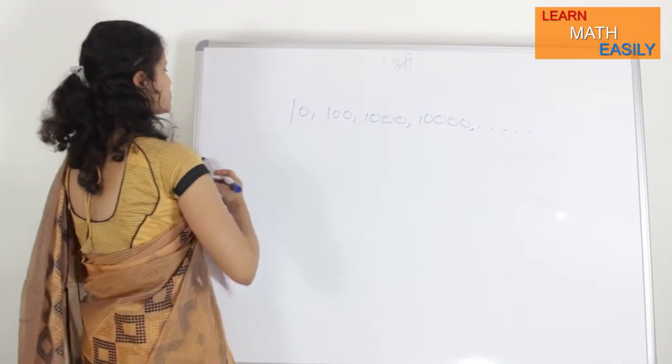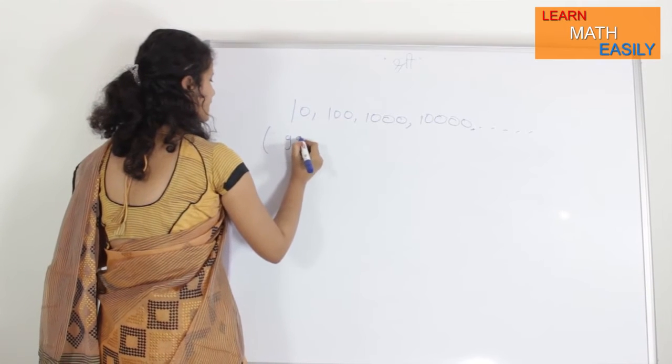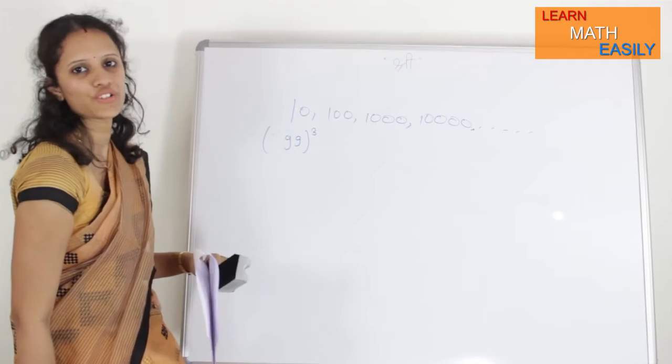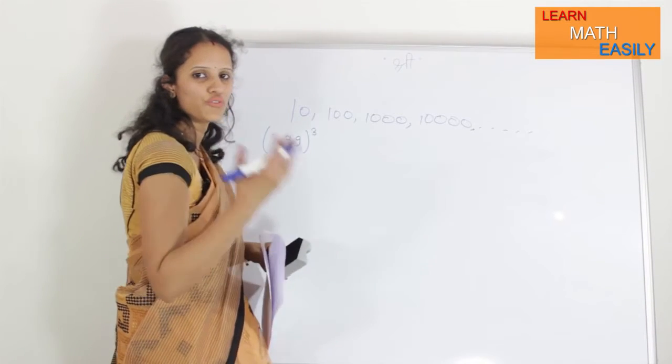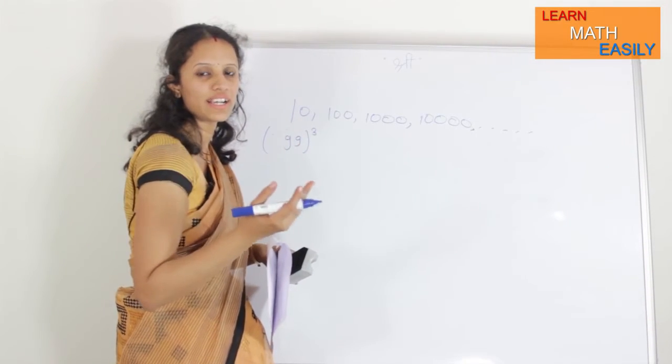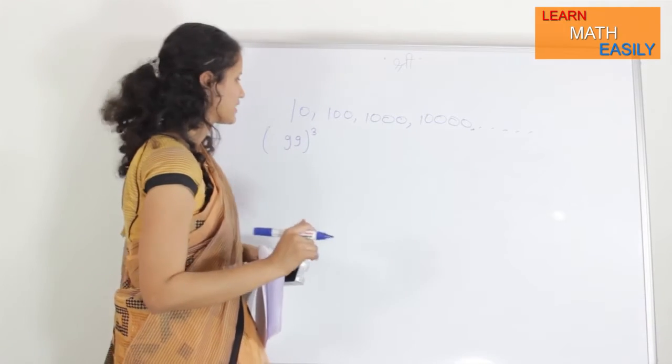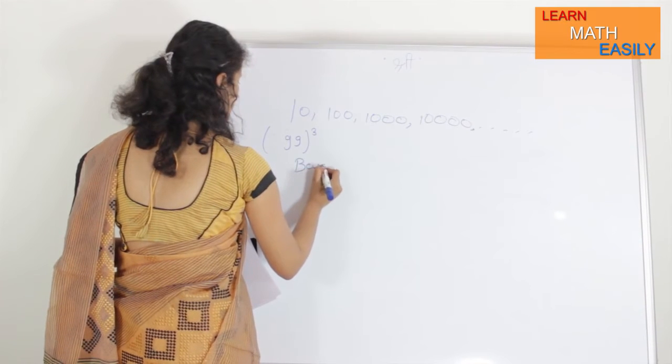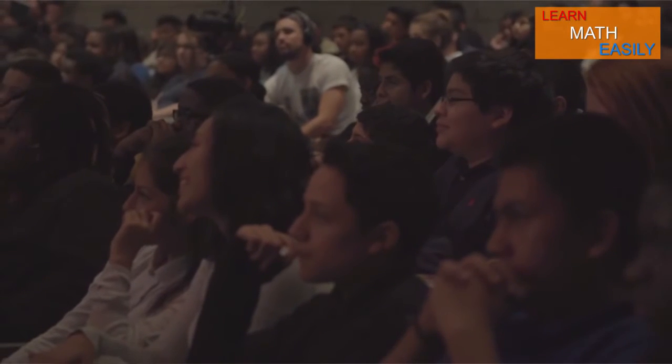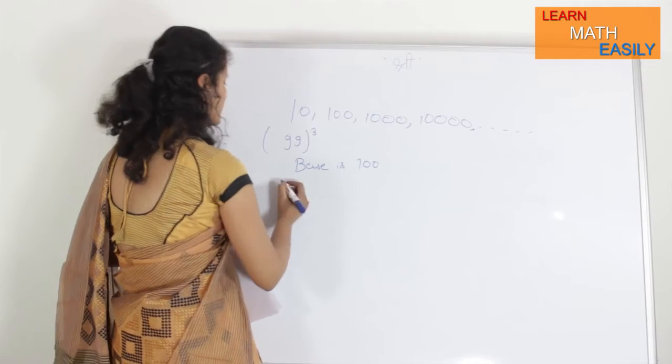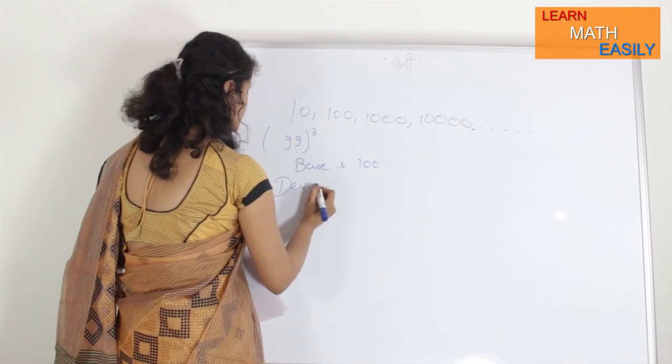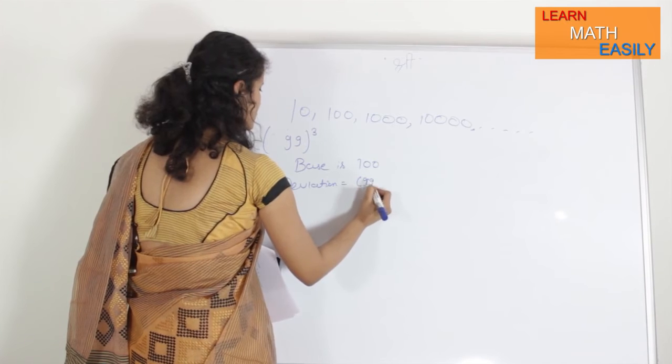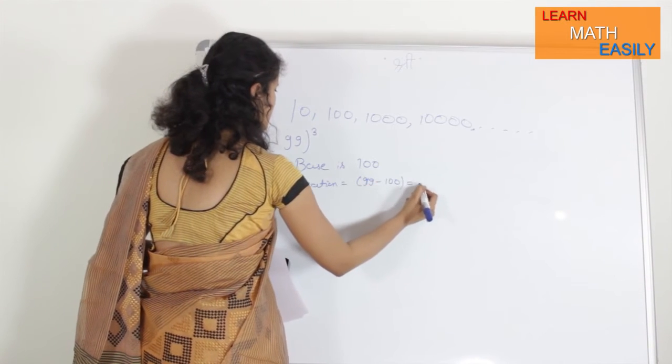Suppose, I have to take 99 whole cube. It takes too much time to do calculation for 99 whole cube. What you have to do, you have to first multiply 99 with 99, again the result with 99. What I am going to do is, I will write, first of all, base is 100 here. Okay, now, its deviation will be equal to 99 minus 100, that is equal to minus 1.